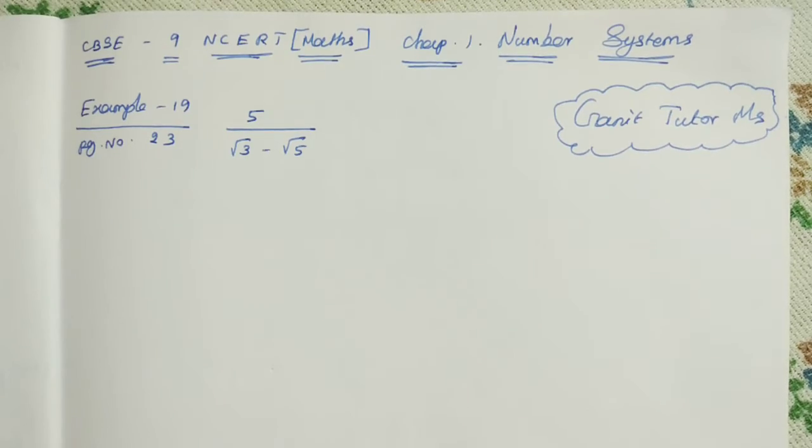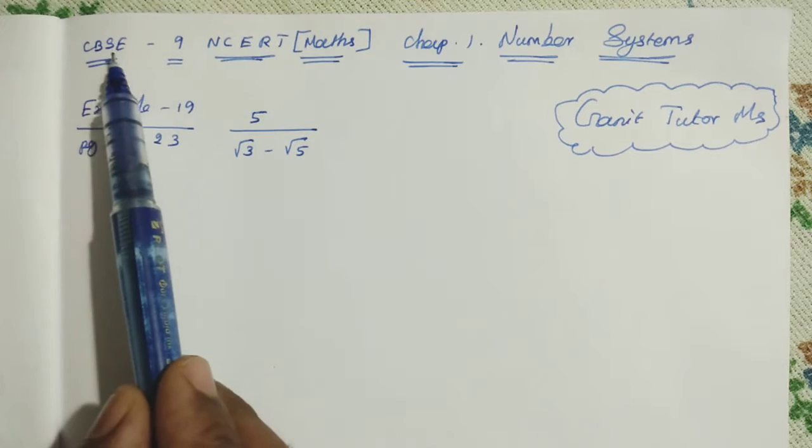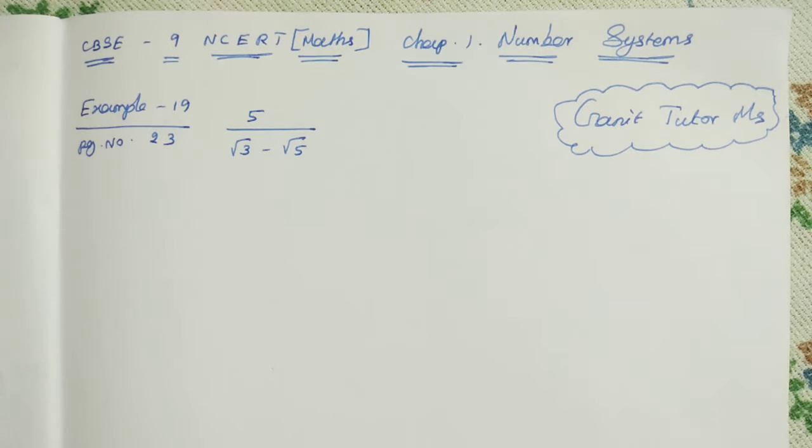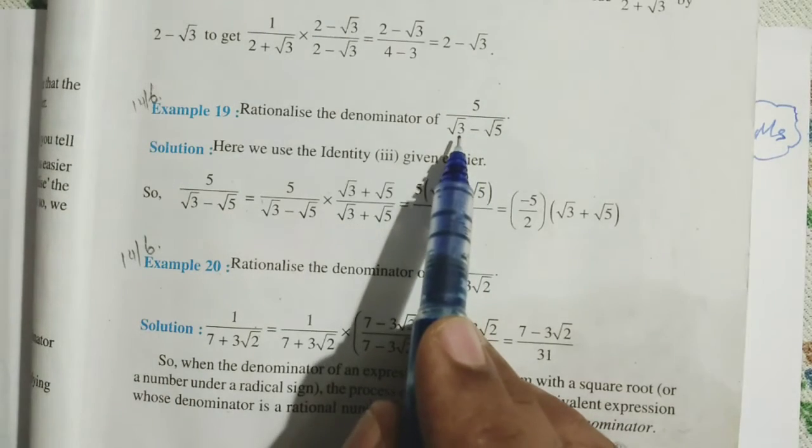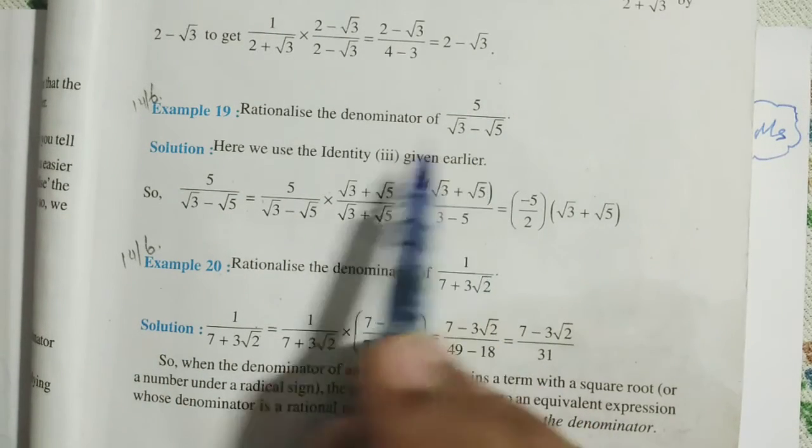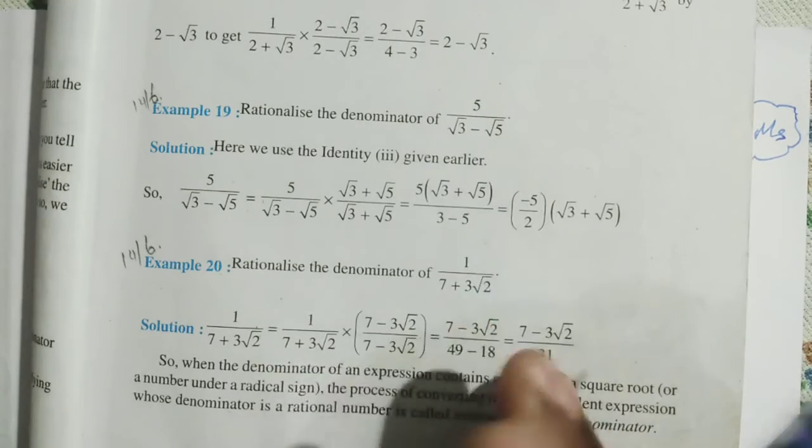In this video, I am going to solve Example 19, page number 23, chapter 1, 9th standard NCERT Maths. What are we given in this problem? Rationalize the denominator of 5 by root 3 minus root 5.